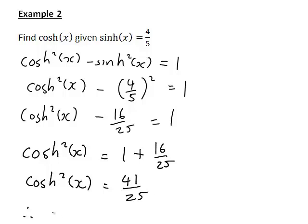Algebraically you'd think that would mean that cosh(x) is equal to plus or minus the square root of 41 on 25. But is that correct given the property of the cosh function?